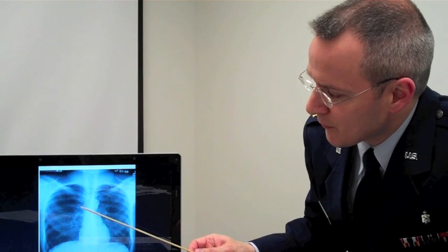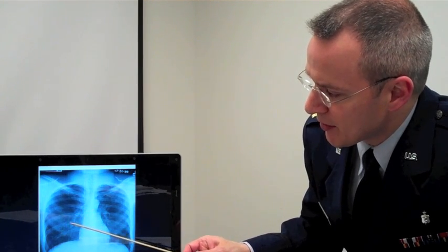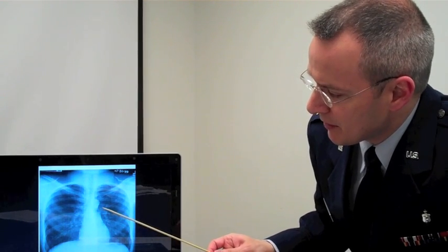I'd also look at the hila, first the right hilum, or the right pulmonary artery, and then the left hilum, seen here as well. Other things to include in my frontal search pattern, would then include the periphery of the chest.